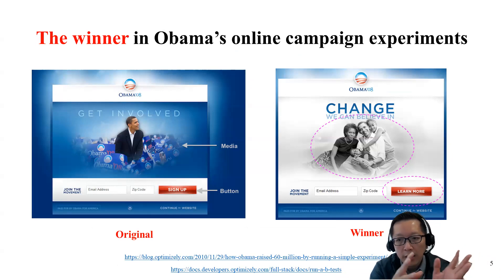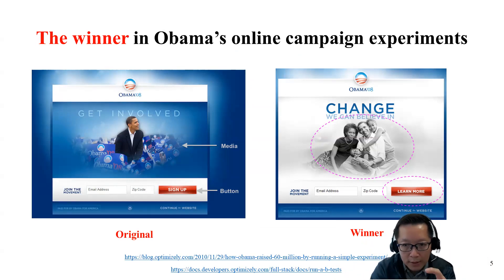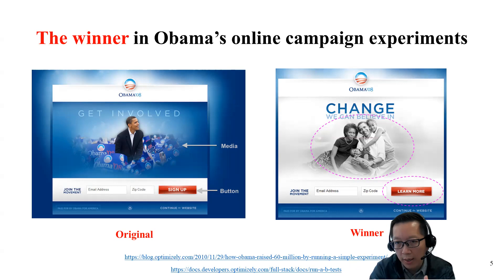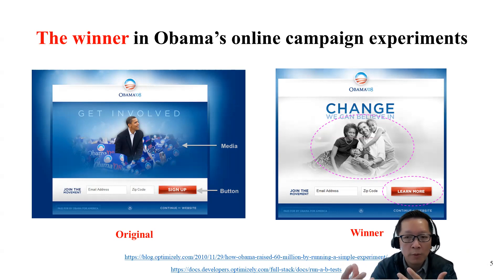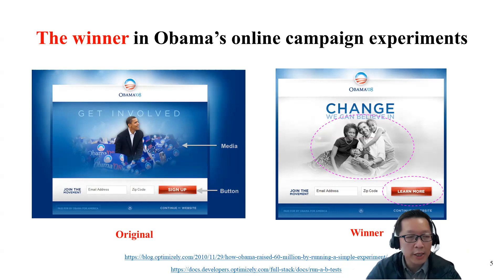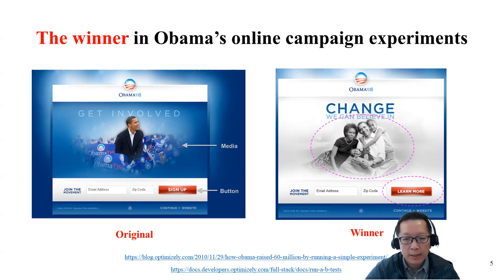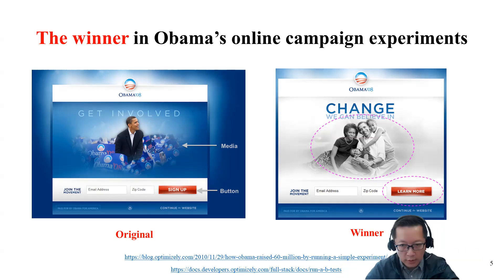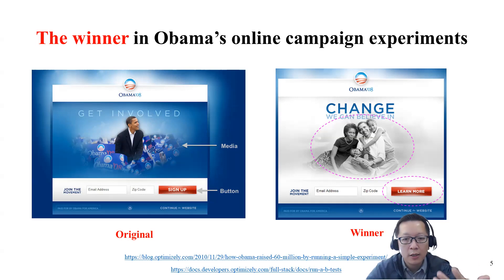At the end, from the original version, they picked the winner — the one on the right, which has a 'learn more' button and a photo of Barack and his family. Perhaps this conveys warmth and a sense of love that people care about. This worked best for his campaign. Even e-commerce portals like Amazon and Taobao, and social media like TikTok, are always running experimental methods to know which version works better.